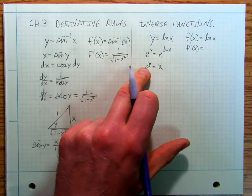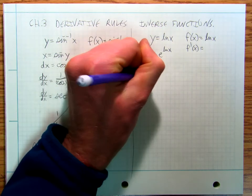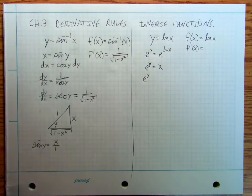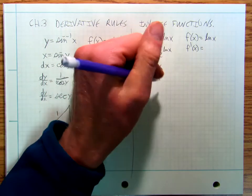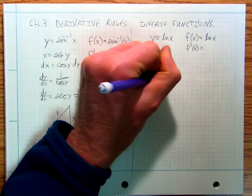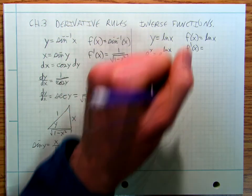Well, the derivative of e to the y is just e to the y. And because I'm doing implicit differentiation, it's not e to the y. It's e to the y dy. And the derivative of x is dx.